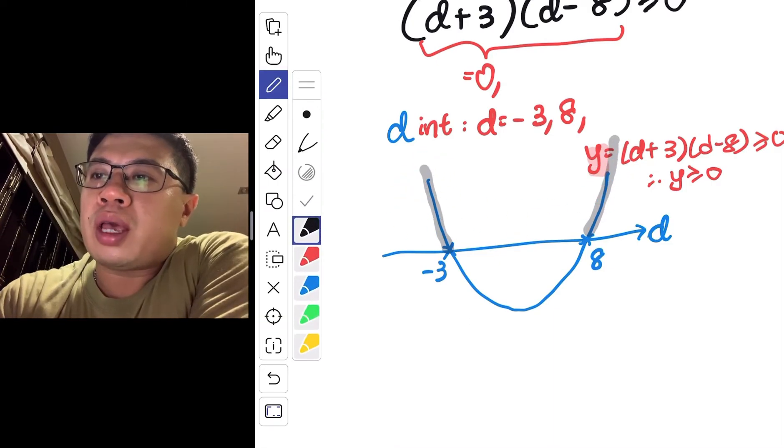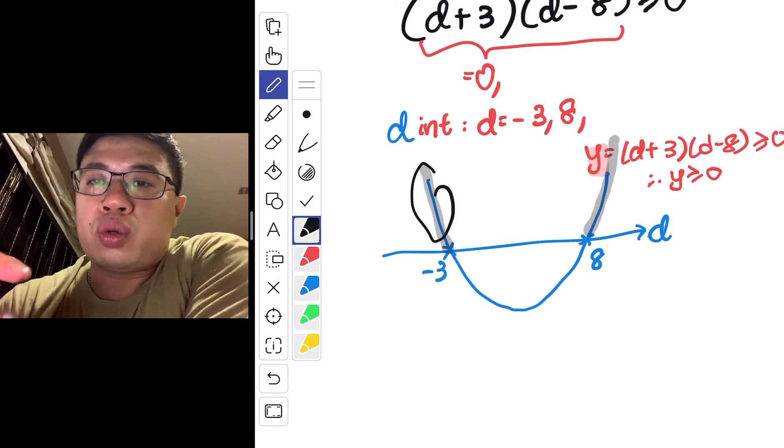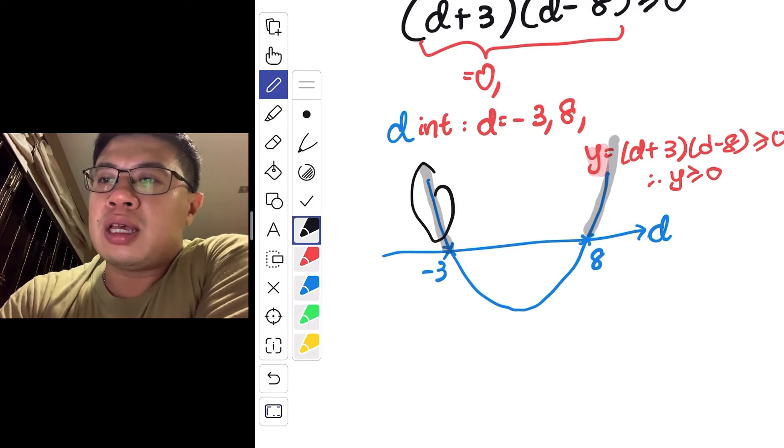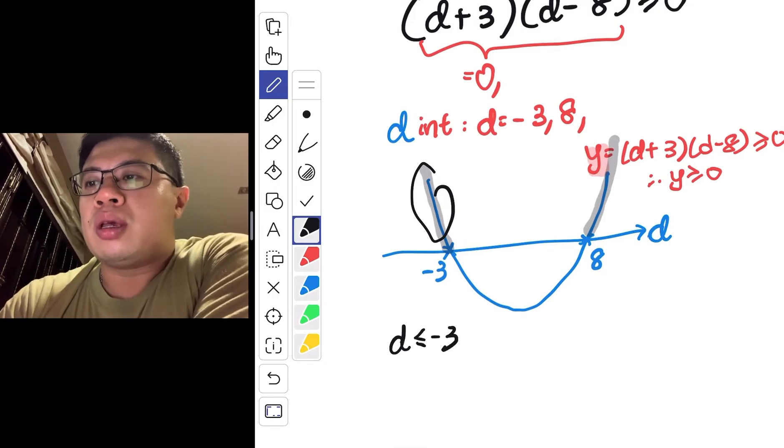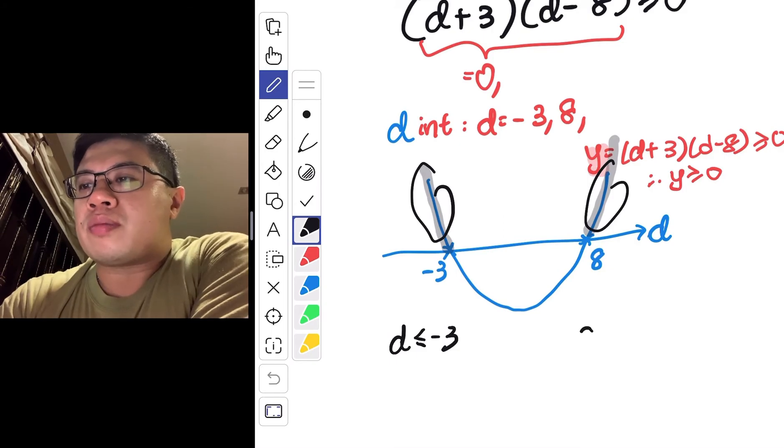So you can see that for the left-hand side, to get this portion of the graph above the x-axis, your d has to be less than equals to minus 3. For the right-hand side, your d has to be more than equals to 8.